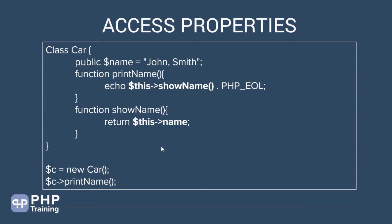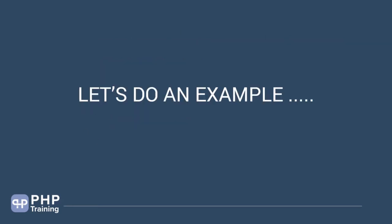$this is a predefined instance of a class, automatically available for you to use. When you mention $this, you are referring to whatever object exists at runtime — $this always holds the instance of the class at that particular runtime. So in this example, $c is the object. When you call print name, $this will always refer to $c. $this refers to the current instance of the class that is trying to access those methods. You cannot access $this outside the class — it must be used inside the class.